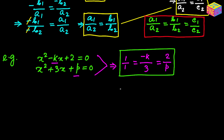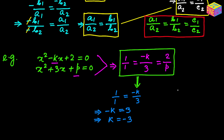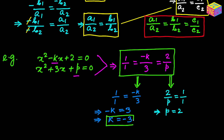From here it's pretty easy. From 1/1 = −k/3, we get k = −3. Similarly, from 2/p = 1/1, we get p = 2. So we have found the values of k and p — those are the solutions needed to ensure that these two quadratic equations have both roots common.